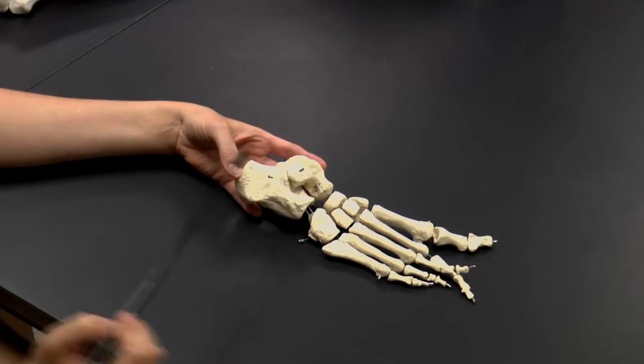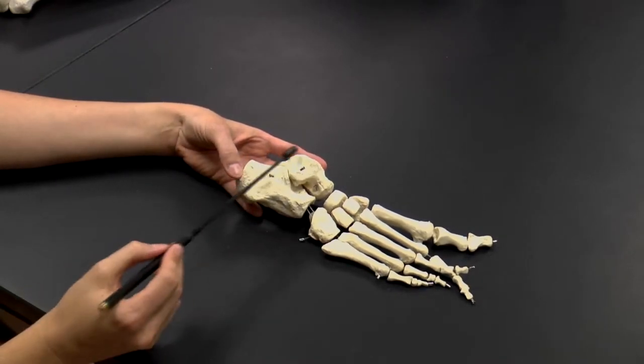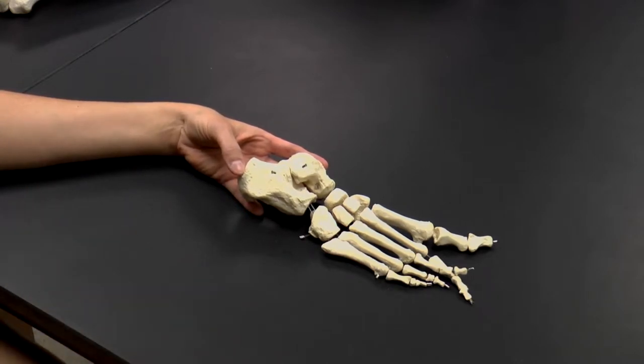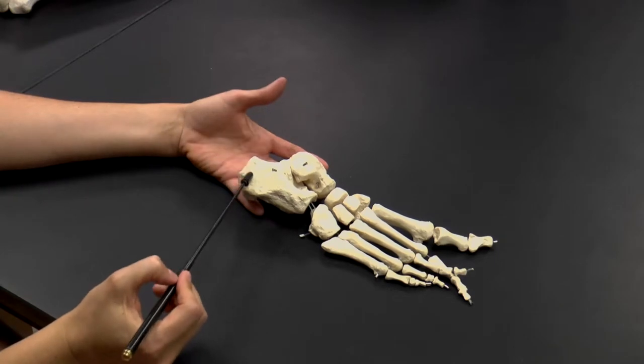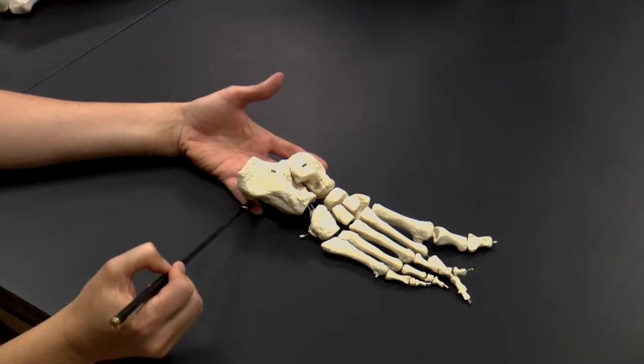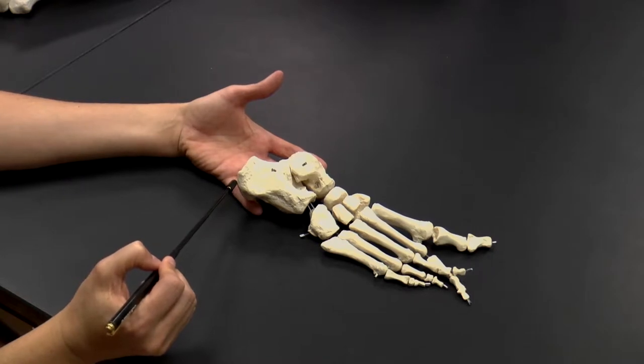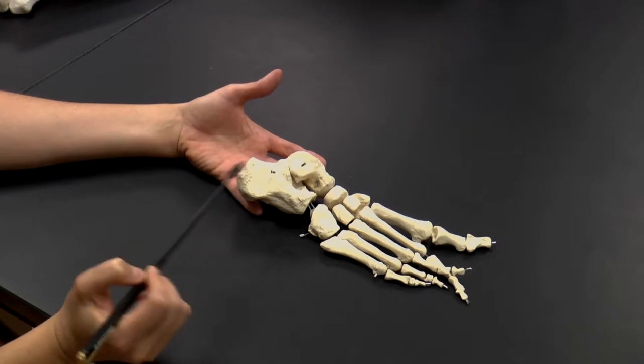So we're going to work our way from the back towards the front, and we have seven tarsal bones. There are two tarsal bones that you need to be able to name on the exam. The first one is this large bone that forms the heel of our foot, and this is called the calcaneus bone. That's one of our tarsals, and it forms the heel.